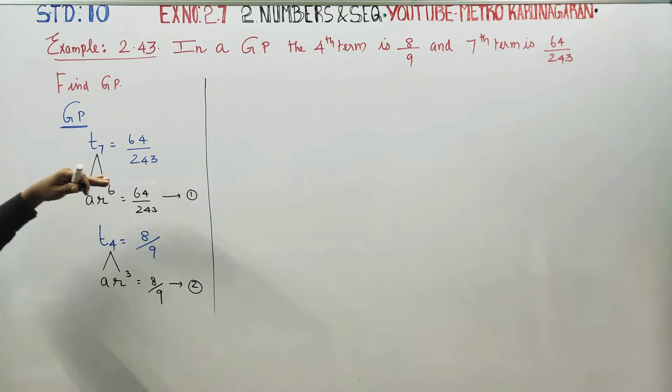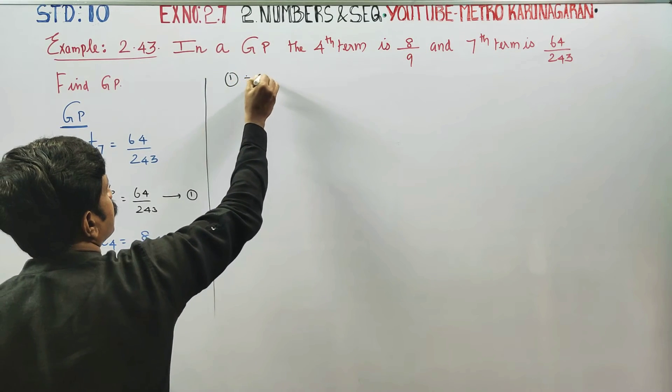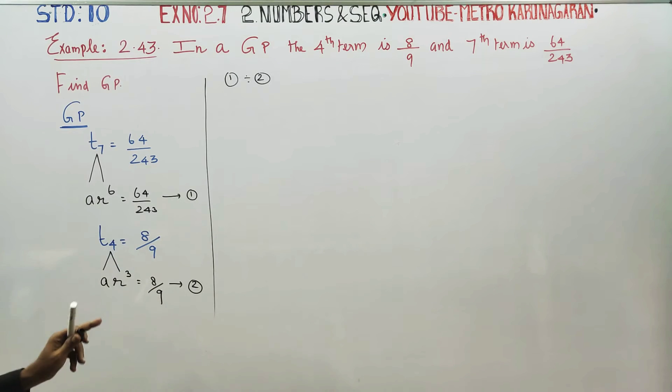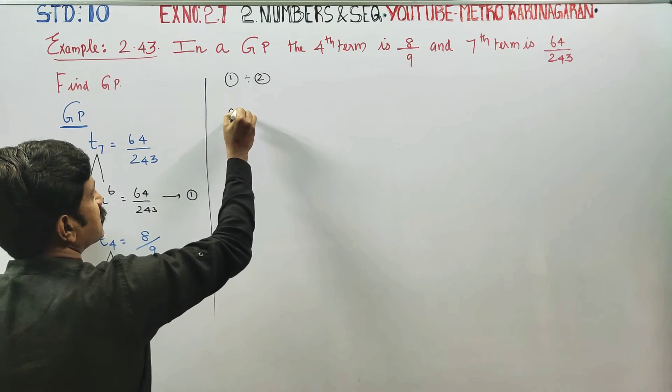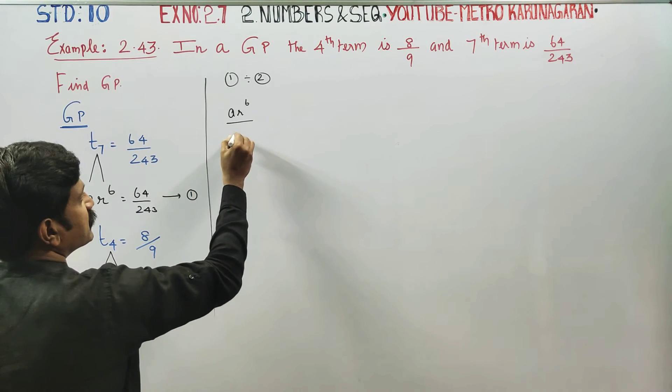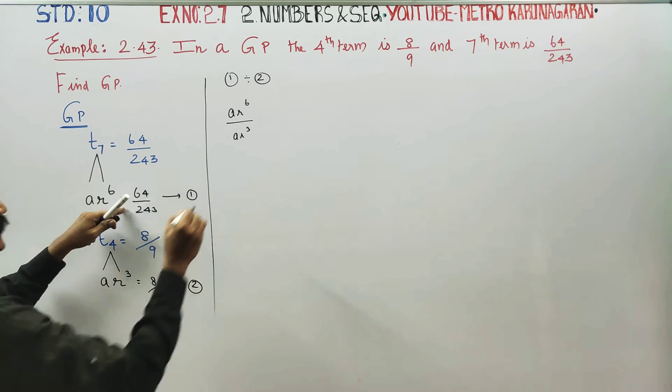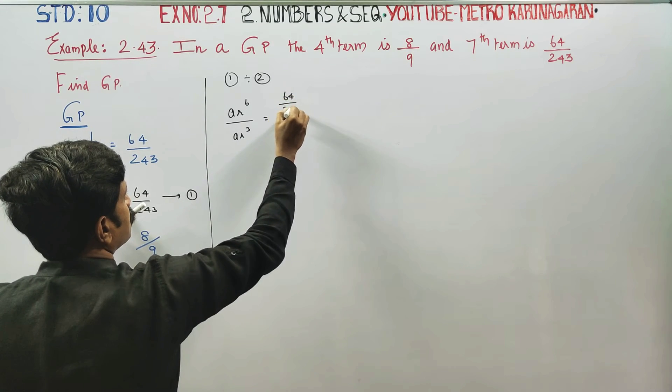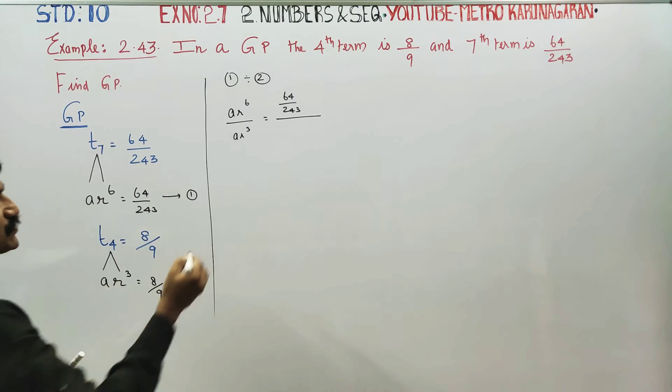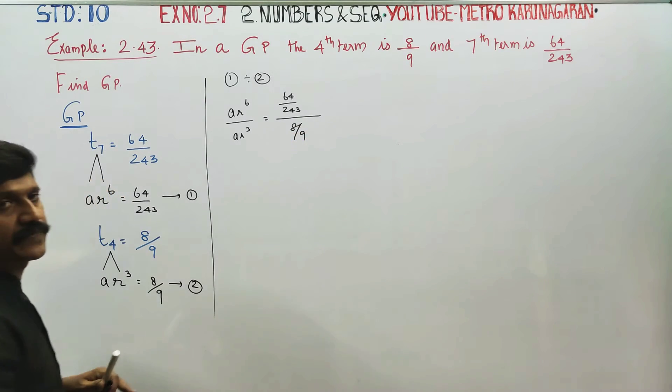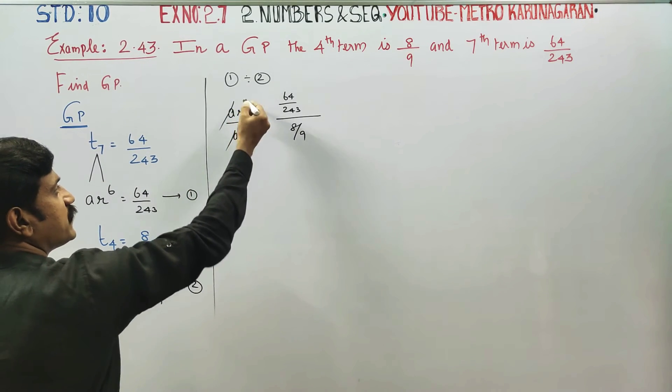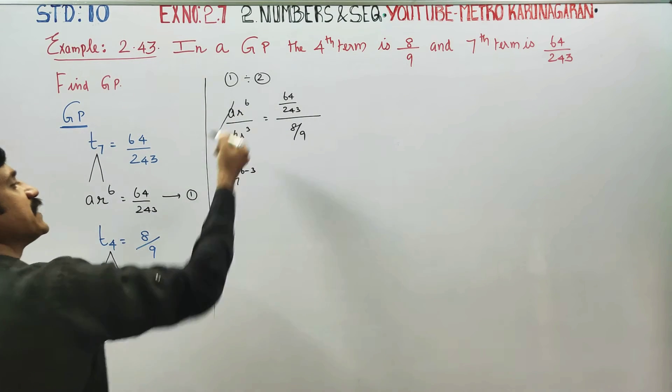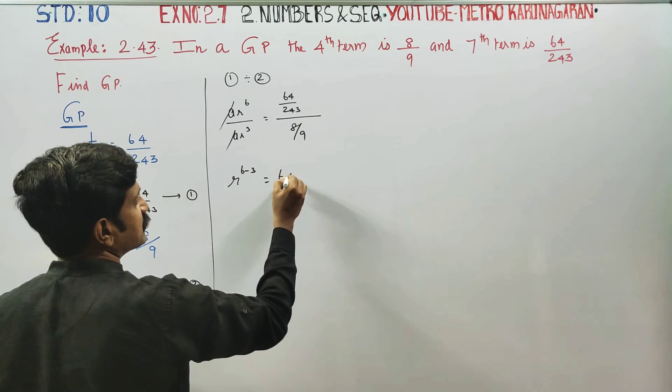Equation number 1 and 2 divide. Equation 1 divided by 2, multiplication, division. LHS is equal to, LHS is equal to 64 by 243, LHS is equal to 8 by 9.